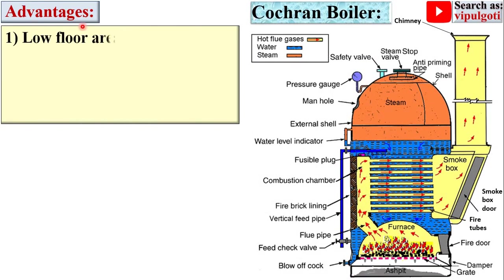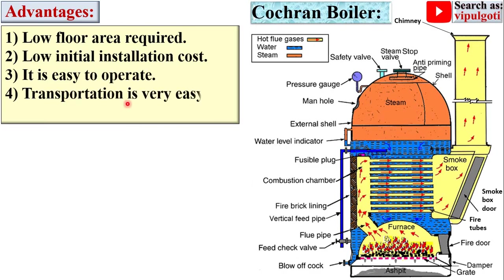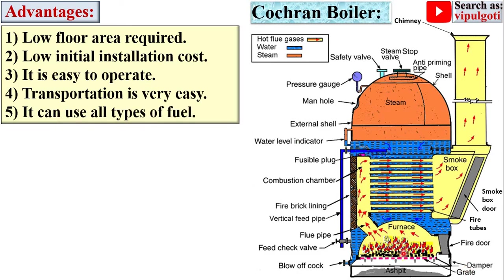Advantages of the Cochran boiler: it requires a low floor area because it is in a vertical position. It has a low initial installation cost. It is easy to operate. Transportation is easy for installation purposes. It can use all types of fuel — although it is generally suitable for coal, all types of fuel can be used.